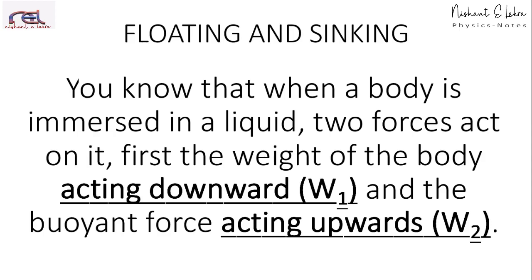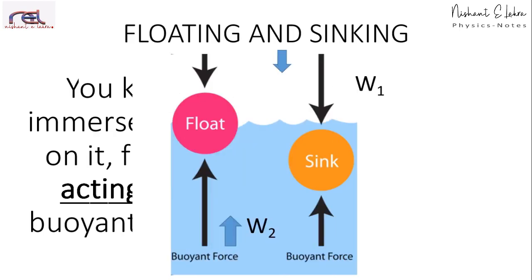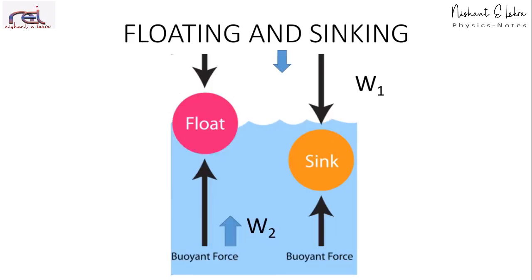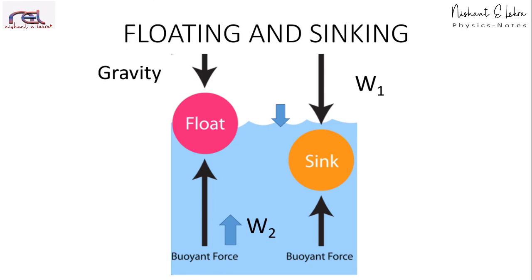So there are two forces acting on a body. Floating and sinking — why does this happen? Because of gravity, there is a downward force. And there is an upward force which is known as buoyant force. Now these two forces play a very important role in letting an object float or sink.